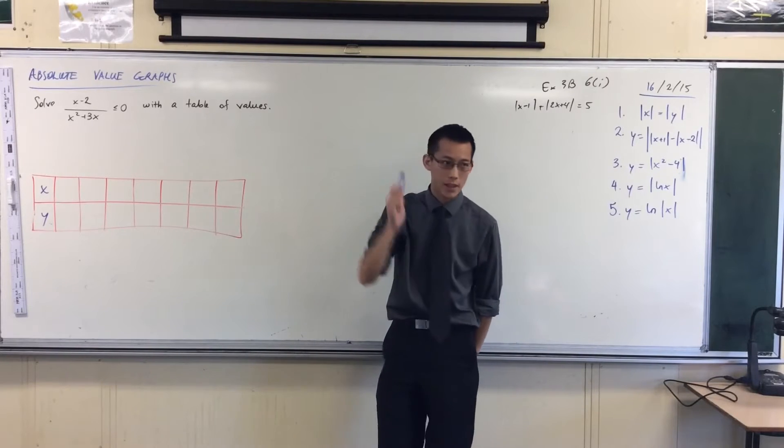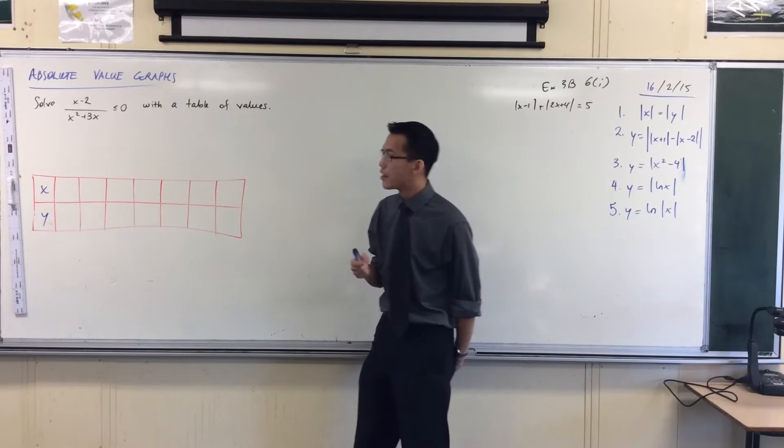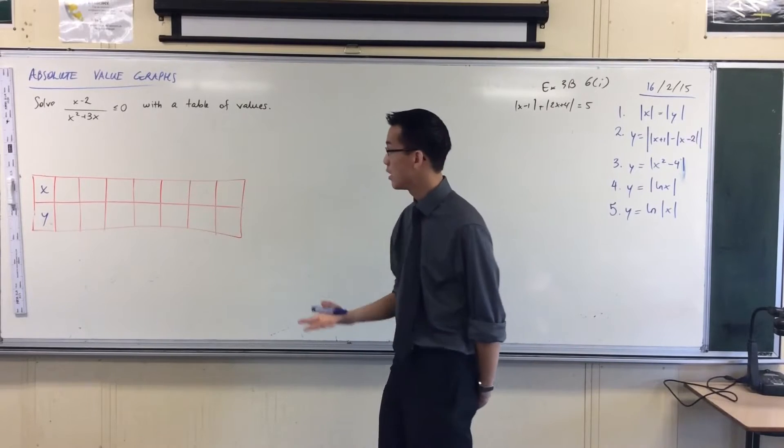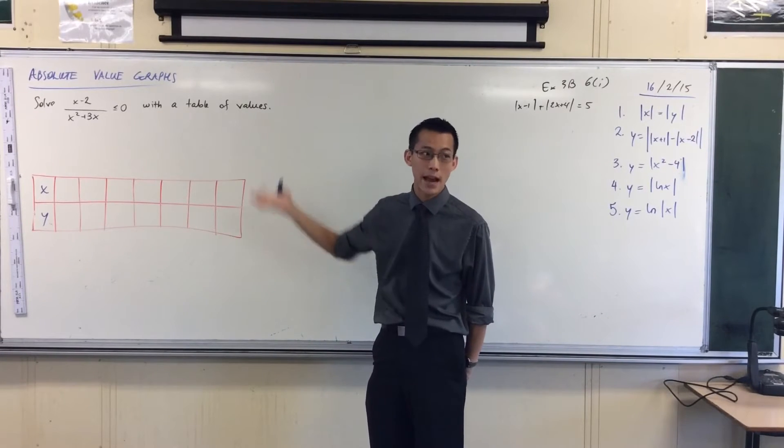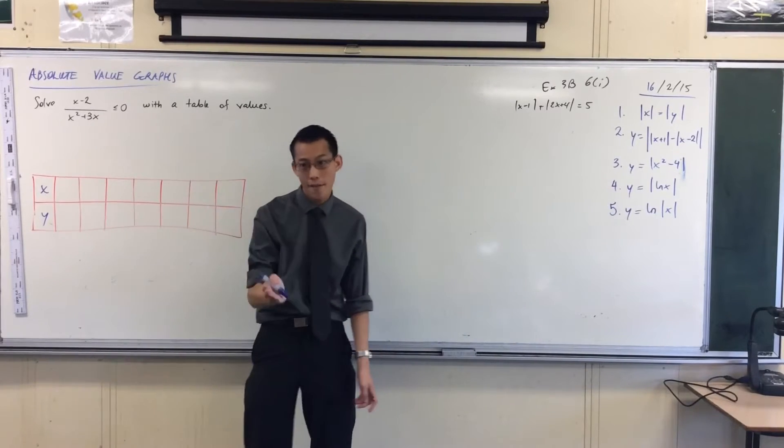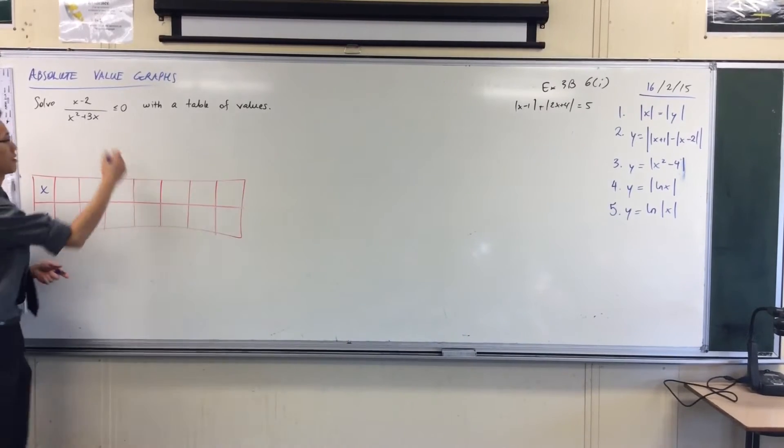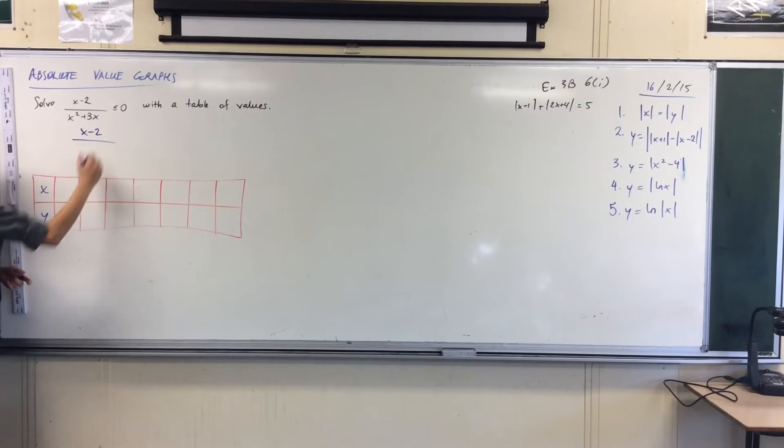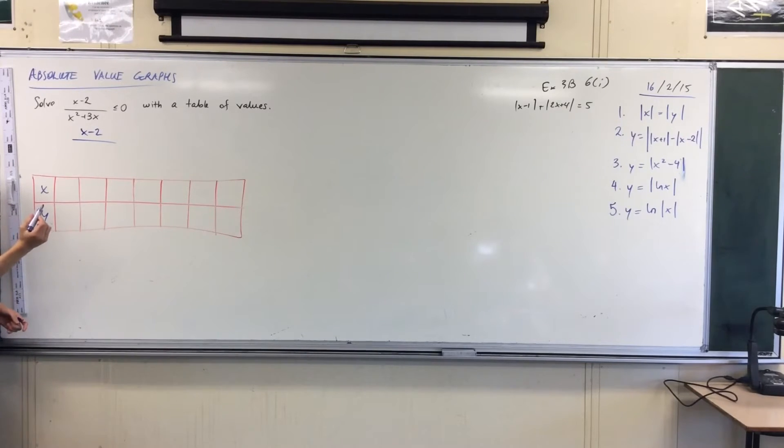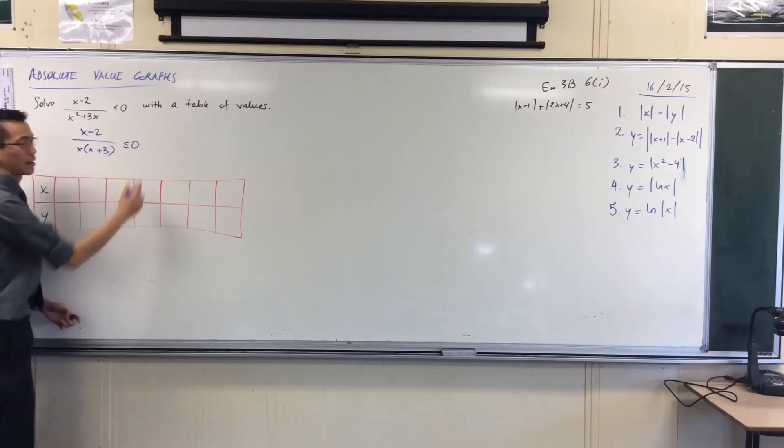Solve this inequality with a table of values. Now the first thing you have to do, just like the method that I suggested if you do this graphically, the first thing you must always do is factorize. Because you need to, you can't read off features from this thing if it's not factorized. But that's not too hard in this case. You've got x minus 2 on the numerator. How shall I write the denominator? X times X plus 3, good. Okay, fantastic.